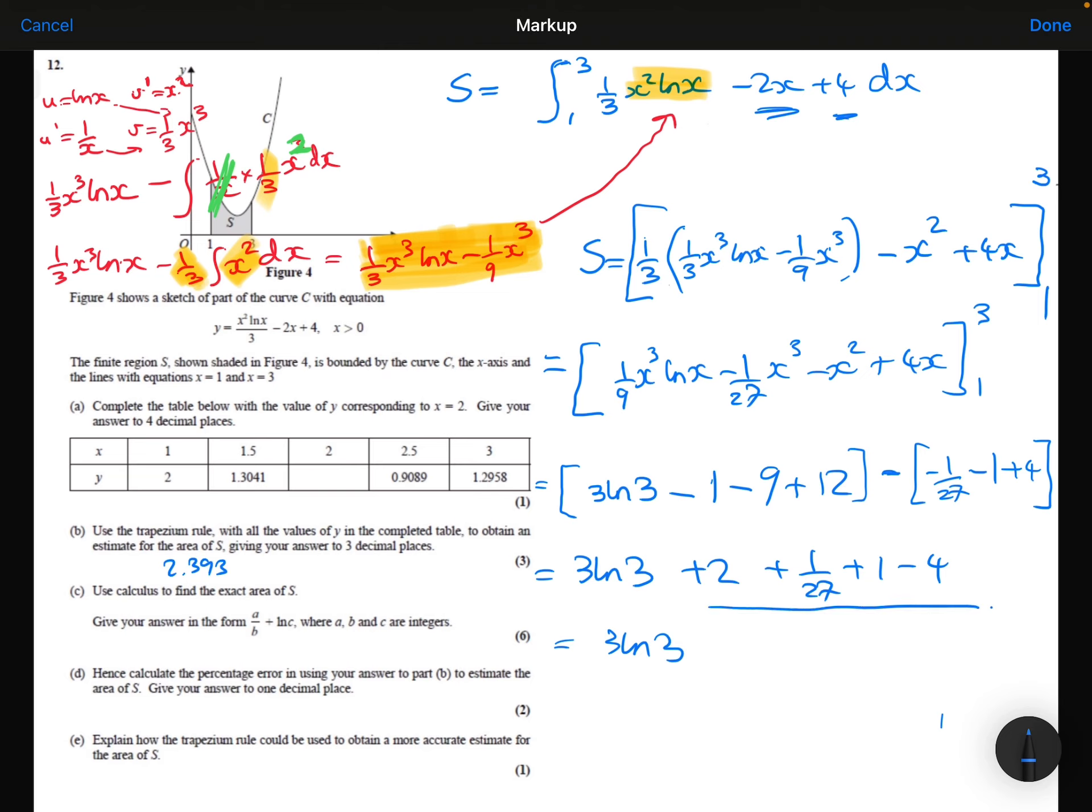All of those terms there are going to simplify to be minus 26 over 27. Just comparing this to how I needed to write the answer, we can see I've got my A over B, that's the minus 26 over 27, but I can't have this coefficient in front of the ln. I just need to have ln C.